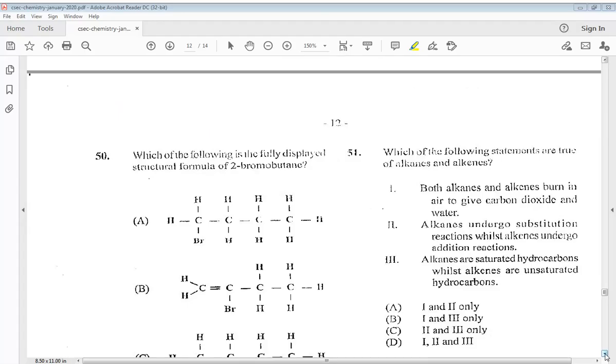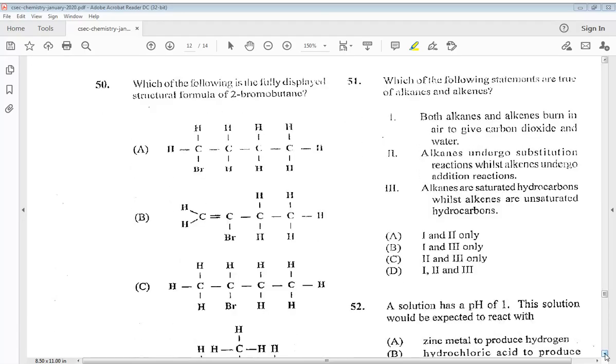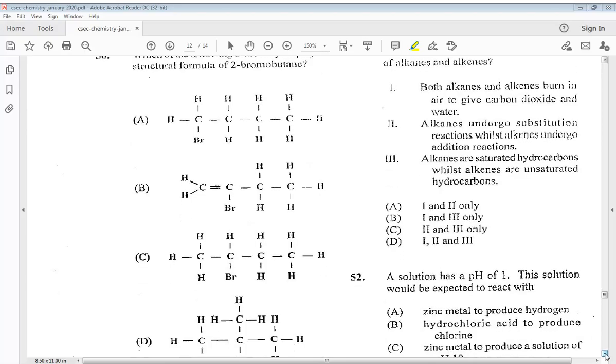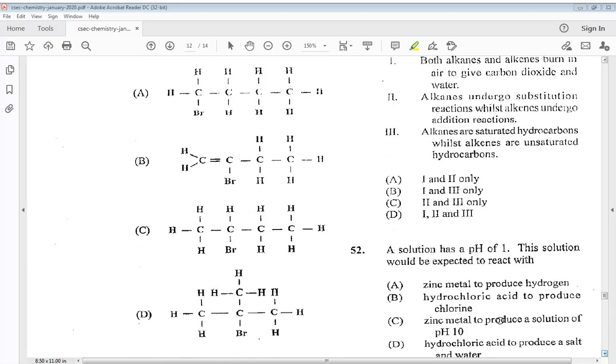Question 50. Which of the following is the fully displayed structural formula of 2-bromobutene? So the answer would be C.